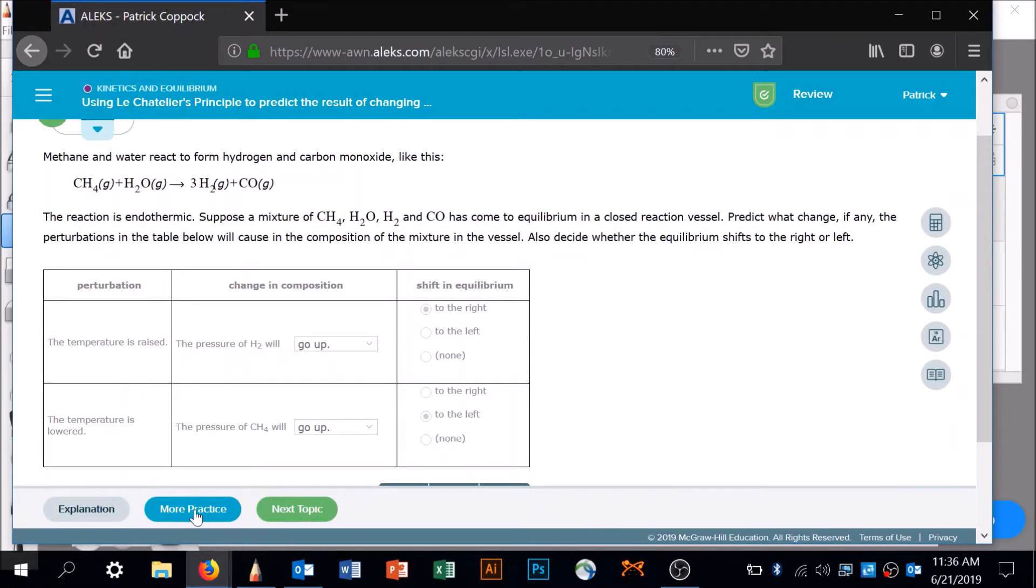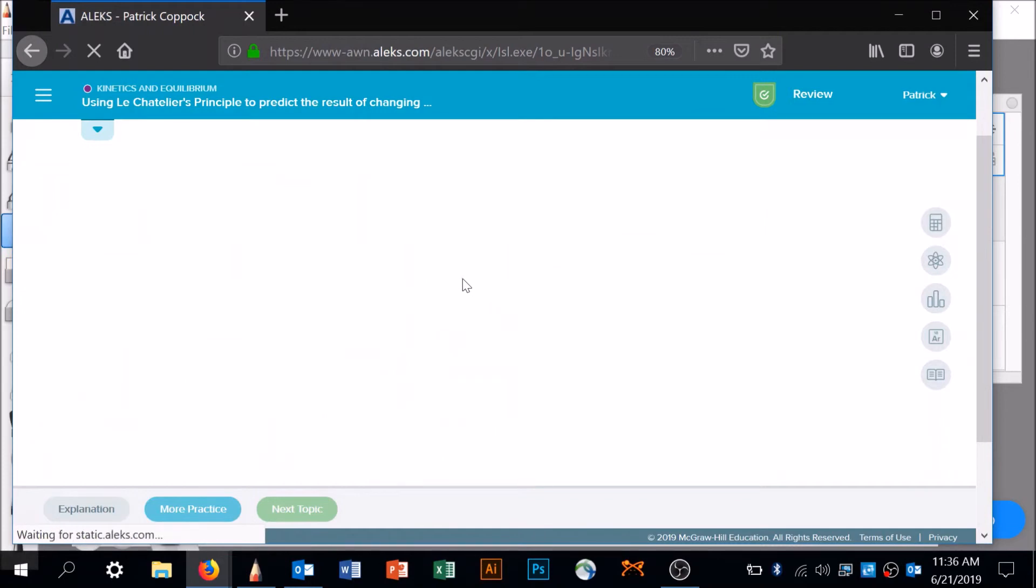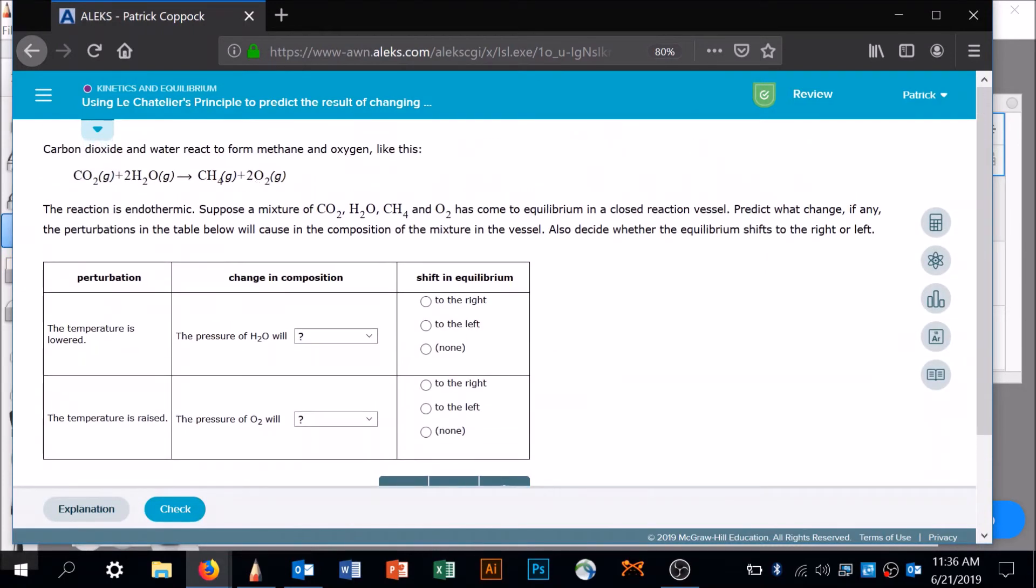Let's do another one for more practice. We're dealing with another endothermic reaction. That means we've got heat over here. If we've got heat over here and the temperature is lowered, we need more heat because the temperature is lowered. In order to take the system back to equilibrium, we need more heat, so it's going to go to the left. Water's going to be produced. It's going to go up.